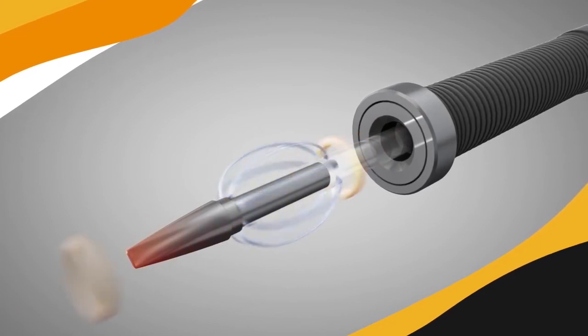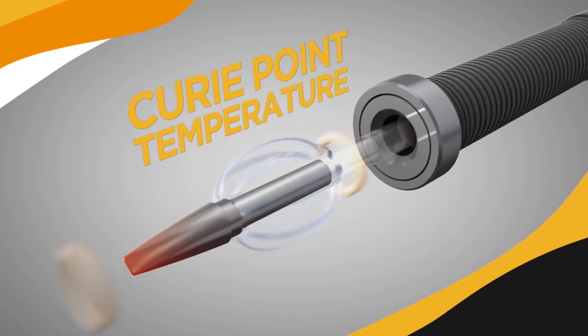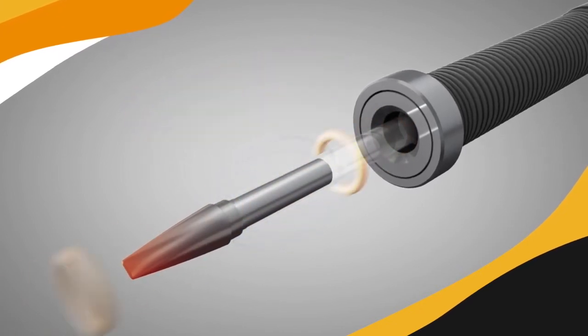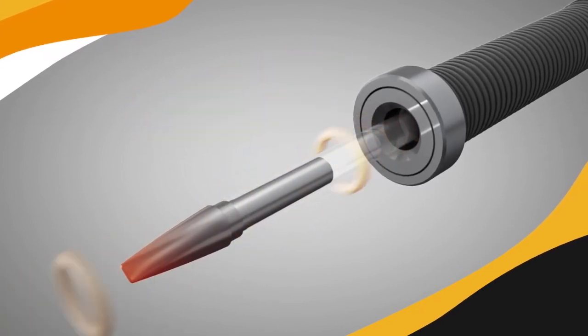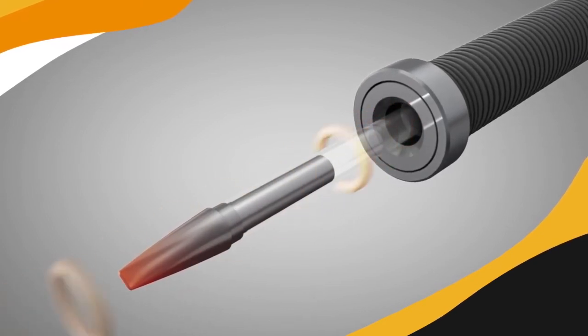As it heats up, the magnetic alloy passes through its Curie point temperature and it loses its magnetic properties. This eliminates the skin effect, causing the migration of current to the low resistance non-heating copper core of the heater.